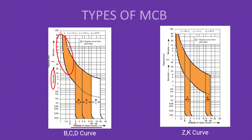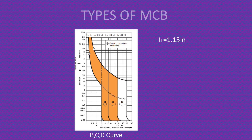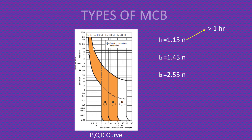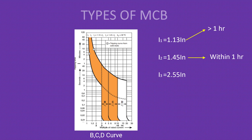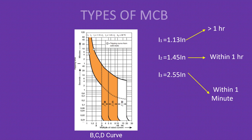From the tripping curve: the thermal tripping up to 2.55 times rated current is the same for all types; the difference lies in short circuit characteristics. For Type B, instantaneous tripping happens between 3 to 5 times full load current. For C, it is 5 to 10 times. For D, it is 10 to 20 times. For Z it is 2 to 3 times, and for K it is 10 to 15 times — within 1 millisecond. Looking at the BCD curve, I1 is 1.13 × full load current (tripping time > 1 hour), I2 is 1.45 × full load current (trips within 1 hour), and I3 is 2.55 × full load current (trips within 1 minute). In the range between 2.55 and 3 times full load current, tripping time will be between 1 minute and 1 millisecond.